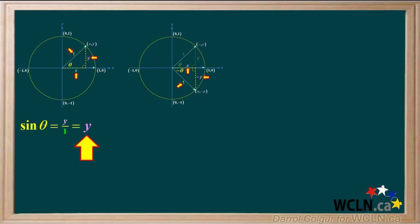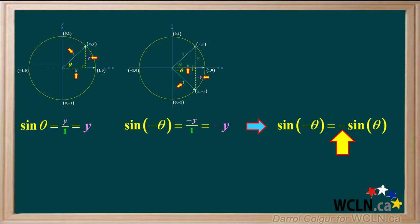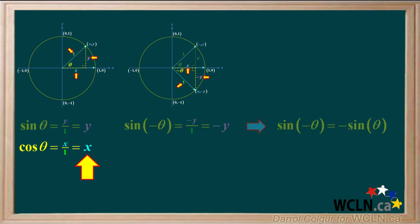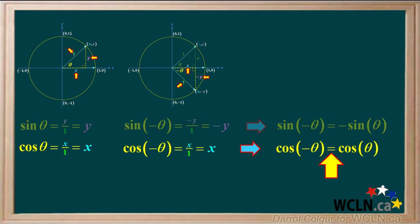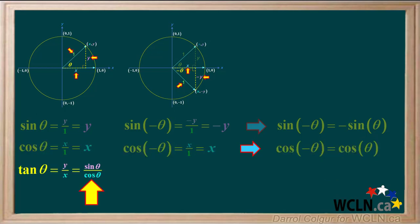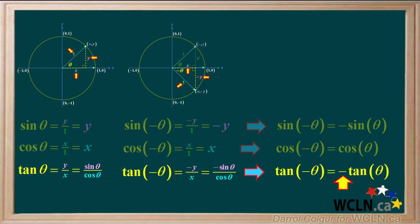Now we'll compare the trig functions of positive theta and negative theta. The sine of positive theta is positive y, and the sine of negative theta is negative y, so the sine of negative theta is negative sine theta. The cosine of negative theta is also positive x, equal to the cosine of positive theta. The tangent of positive theta is positive sine theta over cosine theta, and the tangent of negative theta is negative sine theta over cosine theta, so the tangent of negative theta is the negative of the tangent of theta.